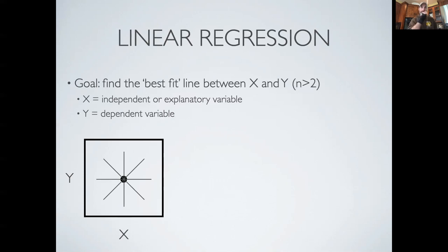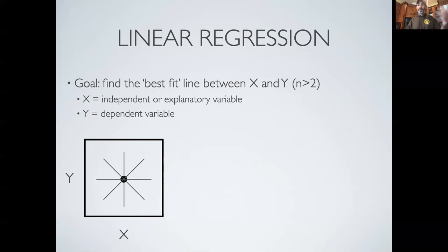The goal in a linear regression is to find the best fitting line between some x and some y when you have more than two data points. X is known as our independent or explanatory variable — our predictor. Y is our dependent variable, our response variable. When we're fitting a linear model, the y's are always the thing we're trying to predict, and the x's are always what we use to predict the y's. There's an implicit assumption of causality in the way that linear models work, but this isn't actually a causal test — causal inference is more complicated.